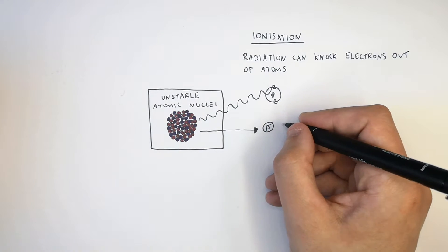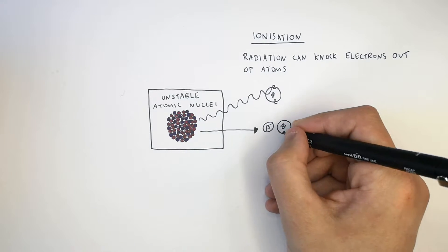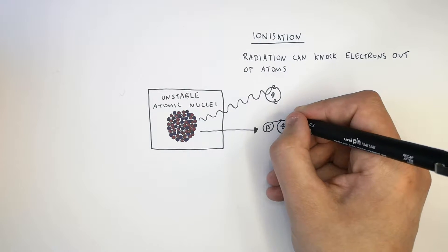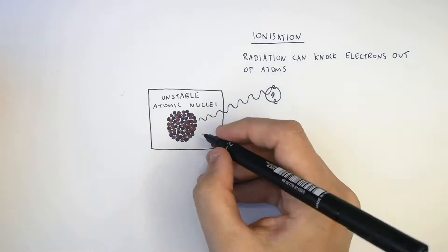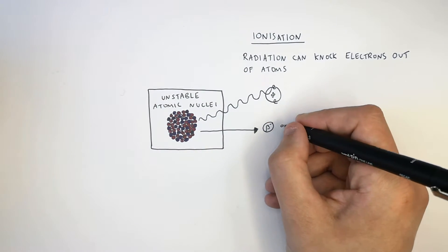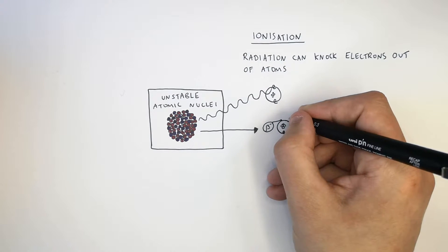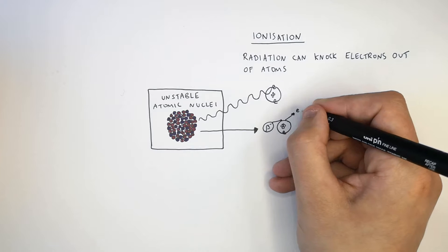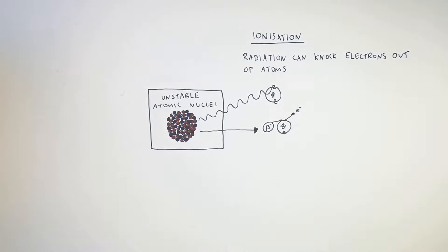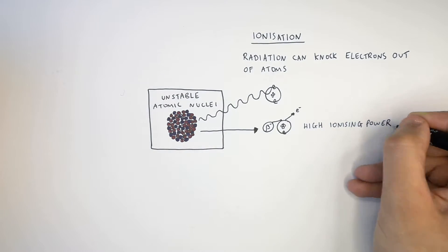Beta particles have a high ionizing power. The fast-moving electron, when it hits an atom, has the ability to knock electrons out of the atom, forming ions. Beta particles have a high ionizing power.